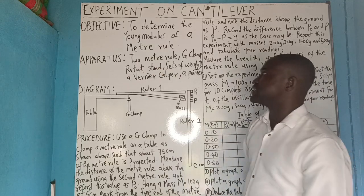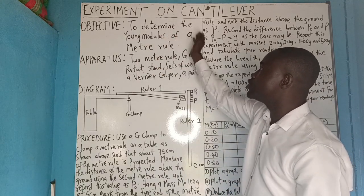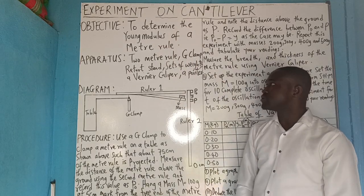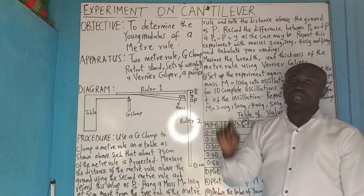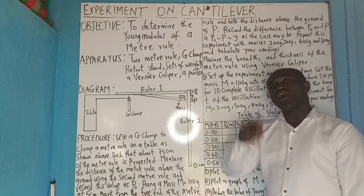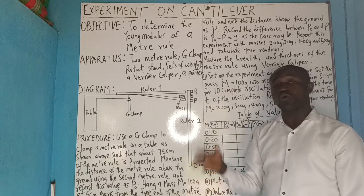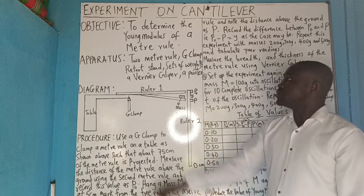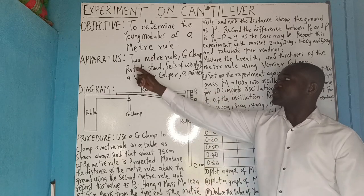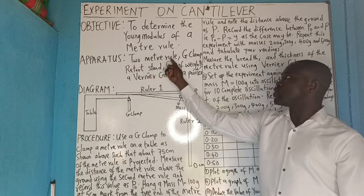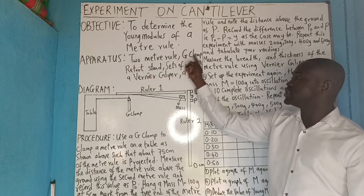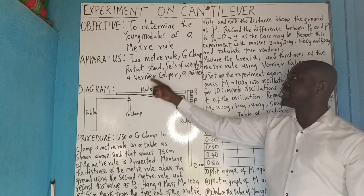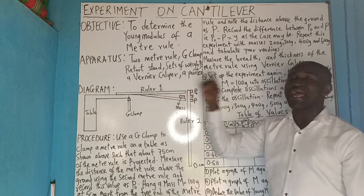The objective is to determine the Young's modulus of a meter rule — that 100-centimeter rule you use in the lab. The apparatus required are: two meter rules, a G-clamp, a retort stand, sets of weights, a vernier caliper, and a pointer.